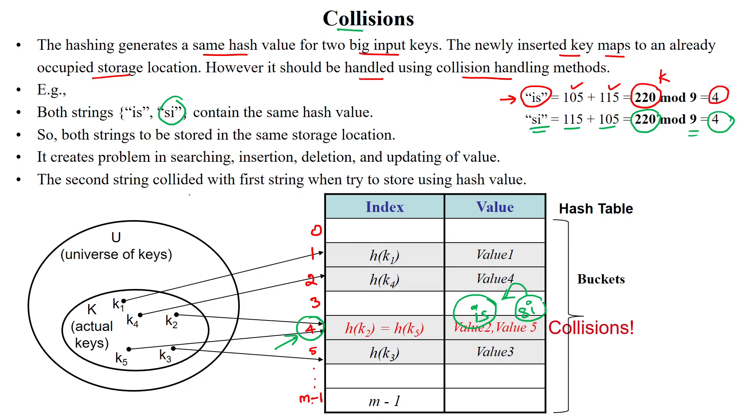It creates a problem whenever to insert the value. At the time also it is colliding. And also when you are accessing the value, what will happen? When if I want to access the value SI, it will calculate the key value 4, then it will search the value. It will confuse either searching word is IS or SI. So during the updation, during the searching also, it will create confusion to access the specific value if both are stored in the same index.